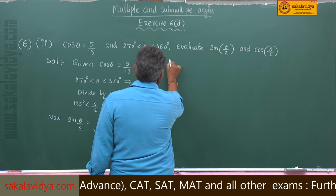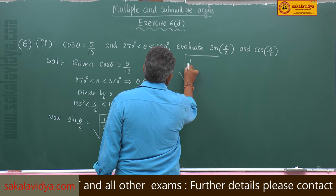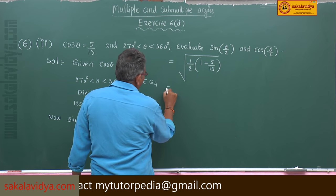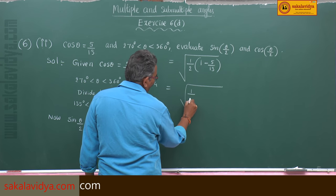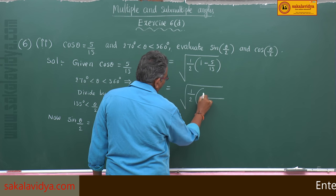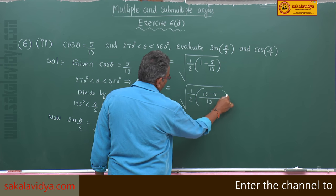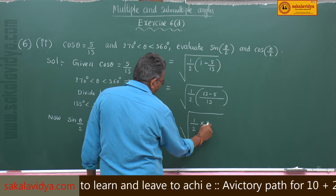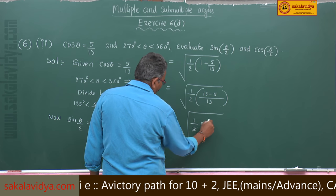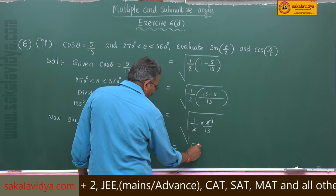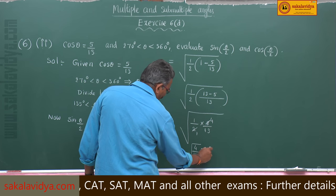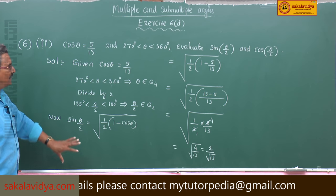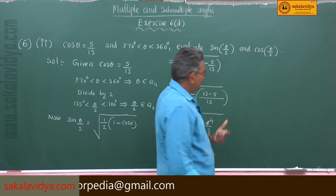sin(θ/2) = √[(1 − cos θ)/2]. Substituting cos θ = 5/13: = √[½ × (1 − 5/13)] = √[½ × (13 − 5)/13] = √[½ × 8/13] = √[4/13] = 2/√13. So that is sin(θ/2).